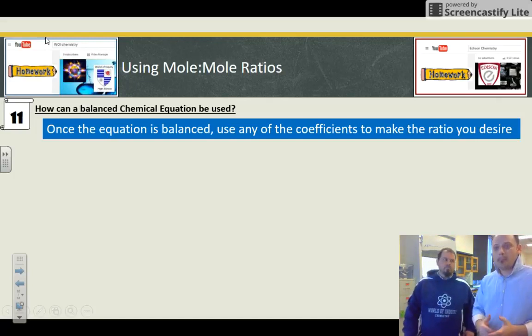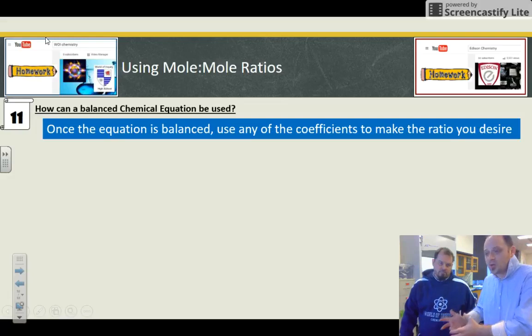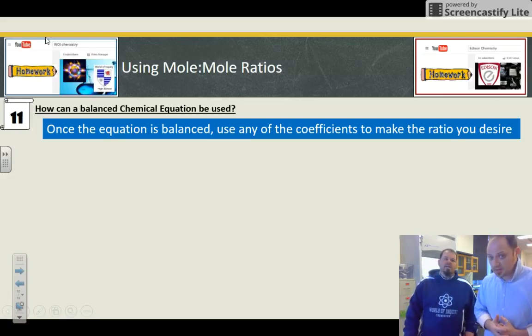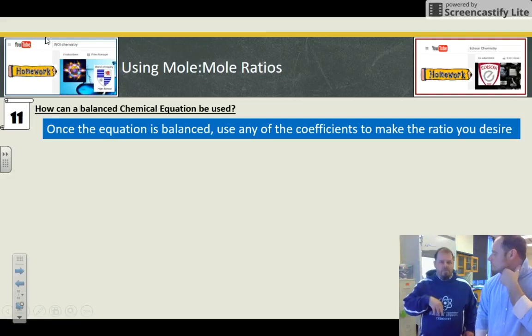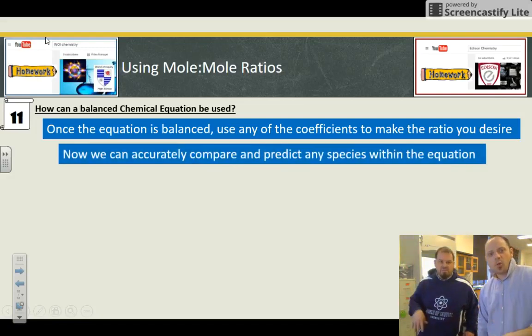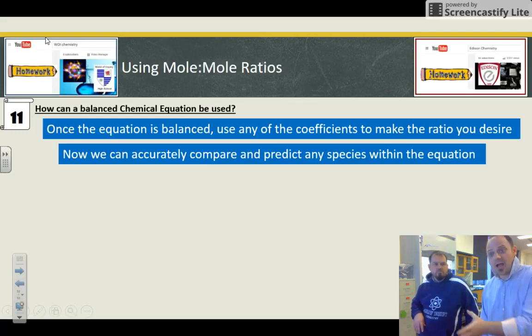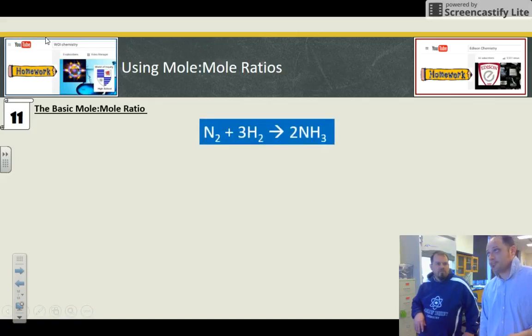To figure out how much material you need to create or how much material you're using. I can make any fraction using any of the coefficients. The only thing I need to make sure is the coefficient I use, I keep that molecule with it. That's really all the rules. We're going to show you, it's more dimensional analysis. Let the units be your guide. We're going to use the balanced equation to create the conversion factor and then utilize it.